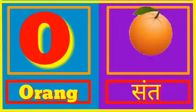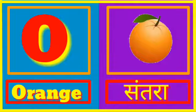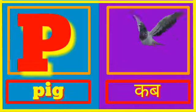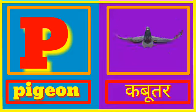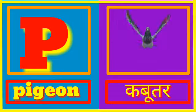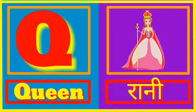O for Orange. Orange means Santra. P for Pigeon. Pigeon means Kabutar. Q for Queen. Queen means Rani.